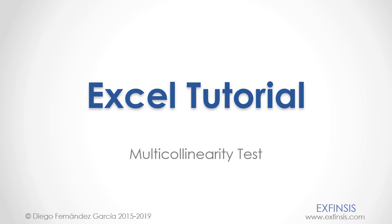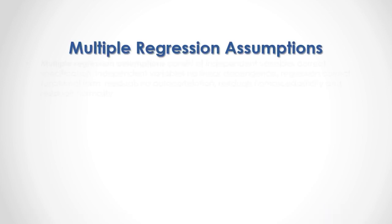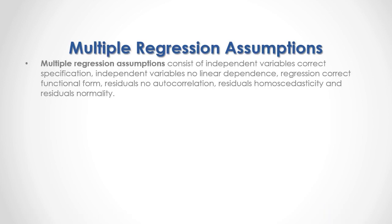Excel Tutorial: Multicollinearity Test. Multiple regression assumptions consist of: independent variables correct specification, independent variables no linear dependence, regression correct functional form, residuals no autocorrelation, residuals homoscedasticity, and residuals normality.